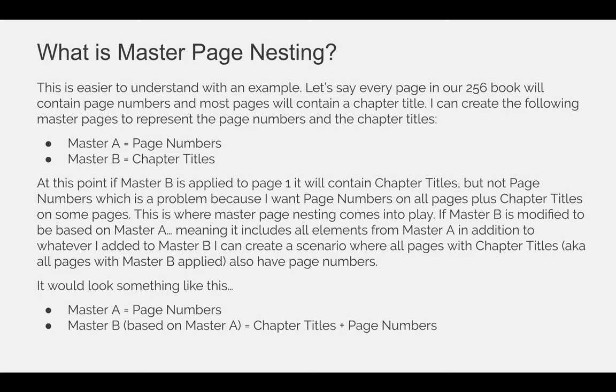Master A will be all of our page numbers, and Master B will be all of our chapter titles, because not every single page contains both master page items. Some pages contain chapter titles, but all pages contain page numbers. At this point, if Master B is applied to page 1, it will contain chapter titles but not page numbers, which is a problem because I want page numbers on all pages plus chapter titles on some pages.